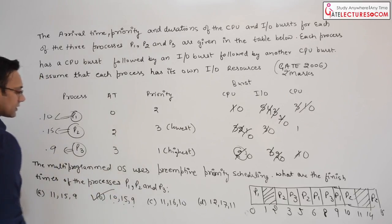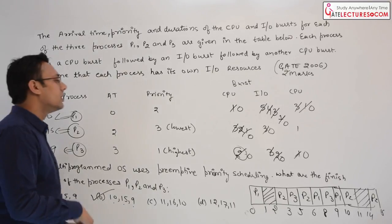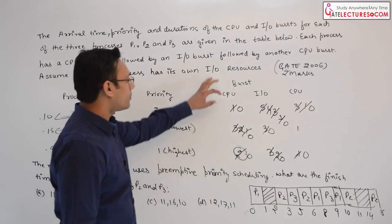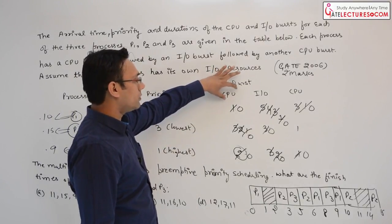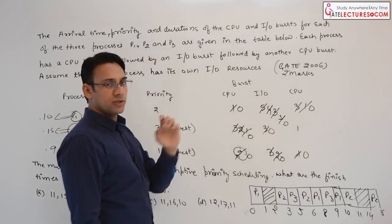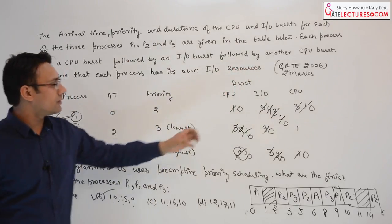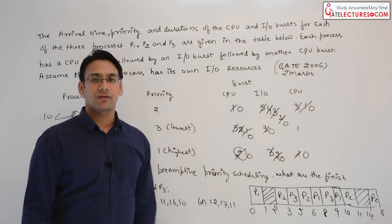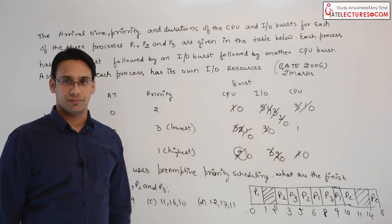Therefore, option number B is correct. As you can see it is a very simple question. The only trick used is that whenever one process is doing CPU work, the other process can do its IO simultaneously without any problem.